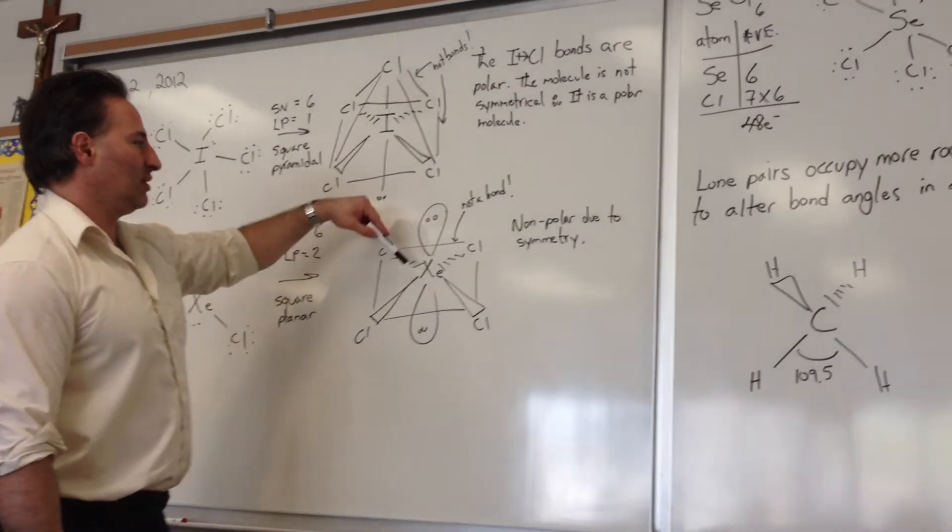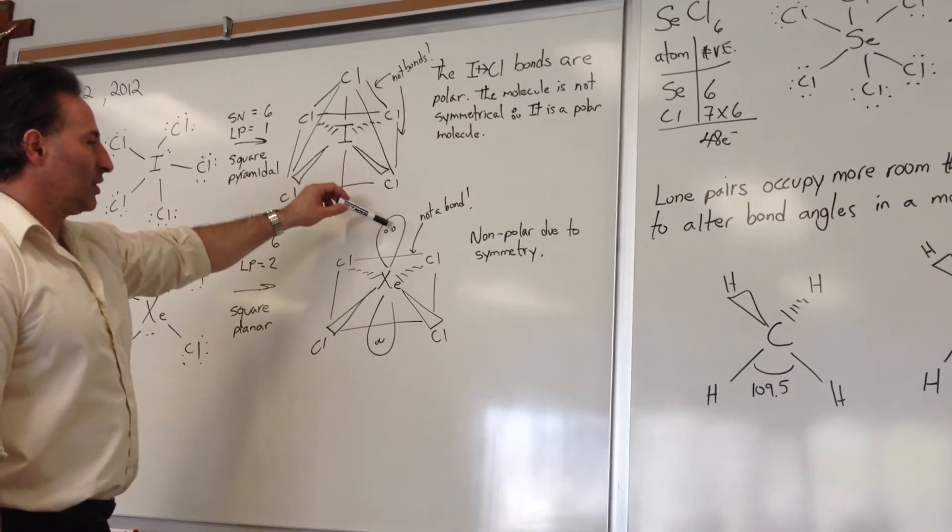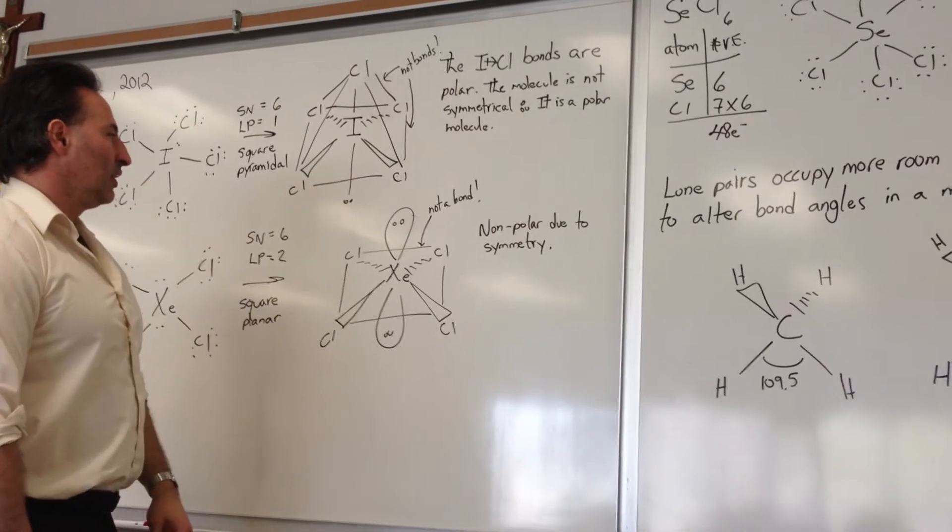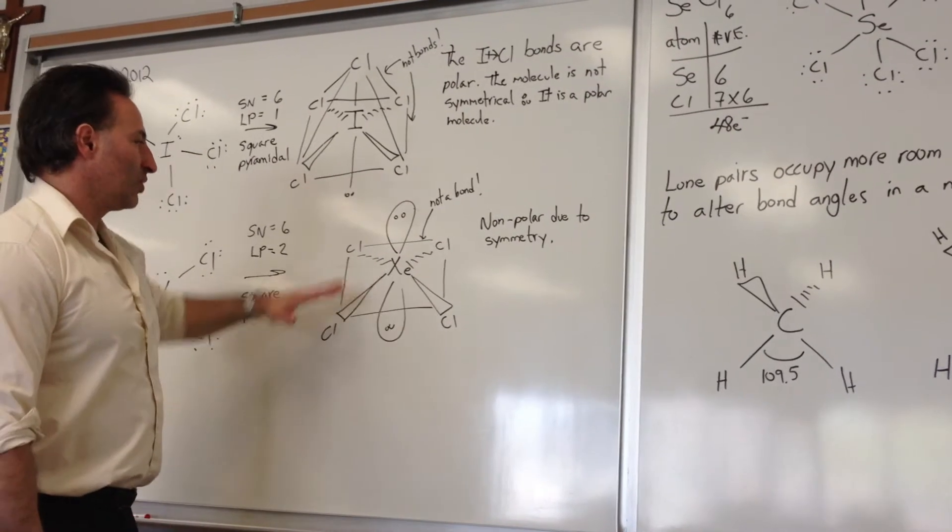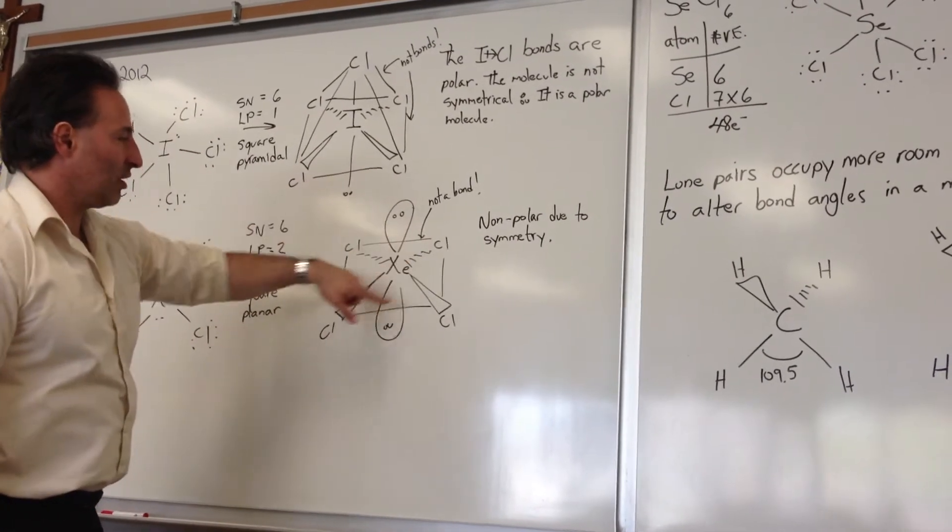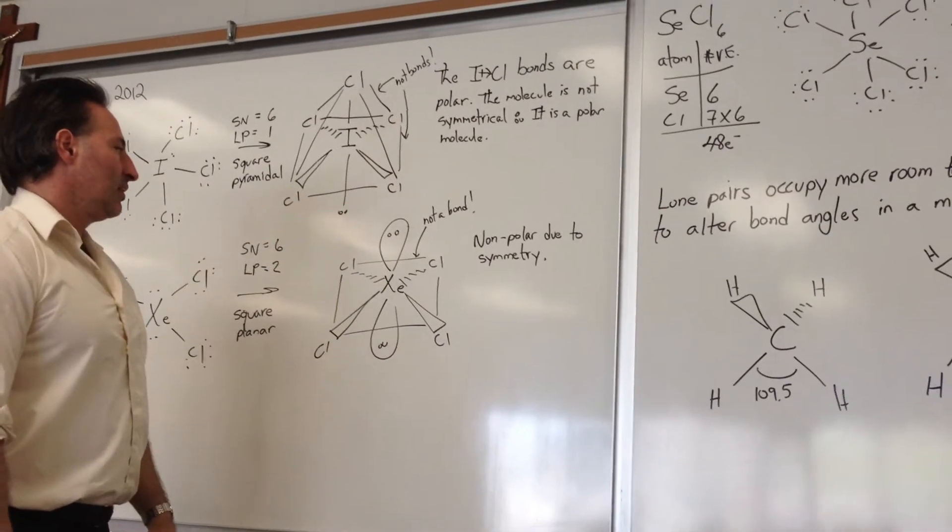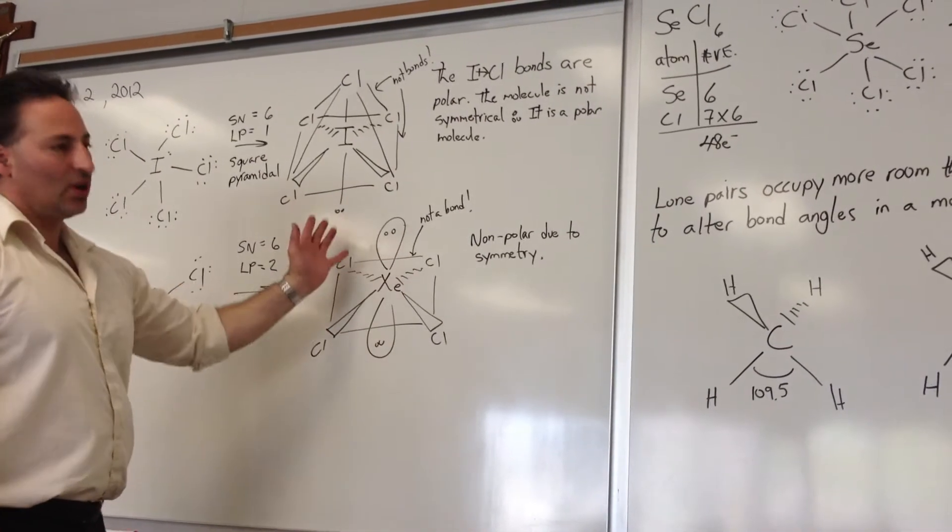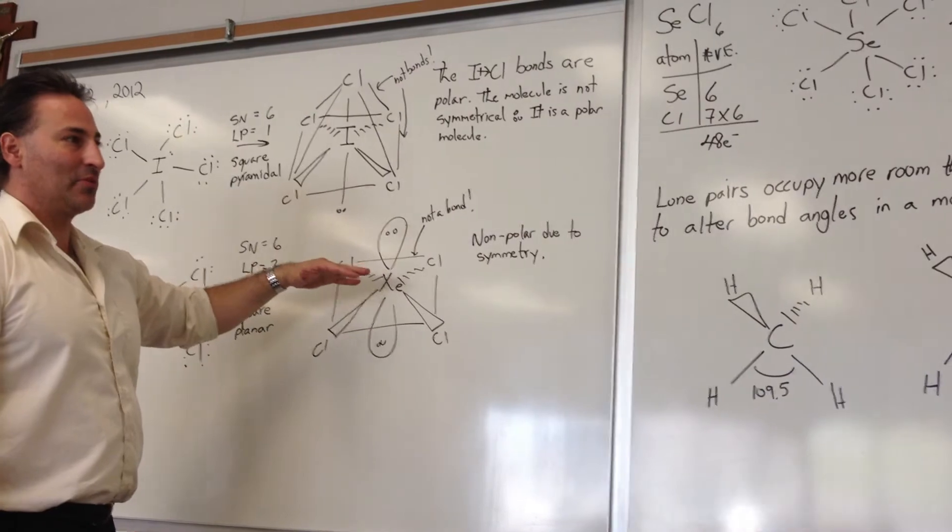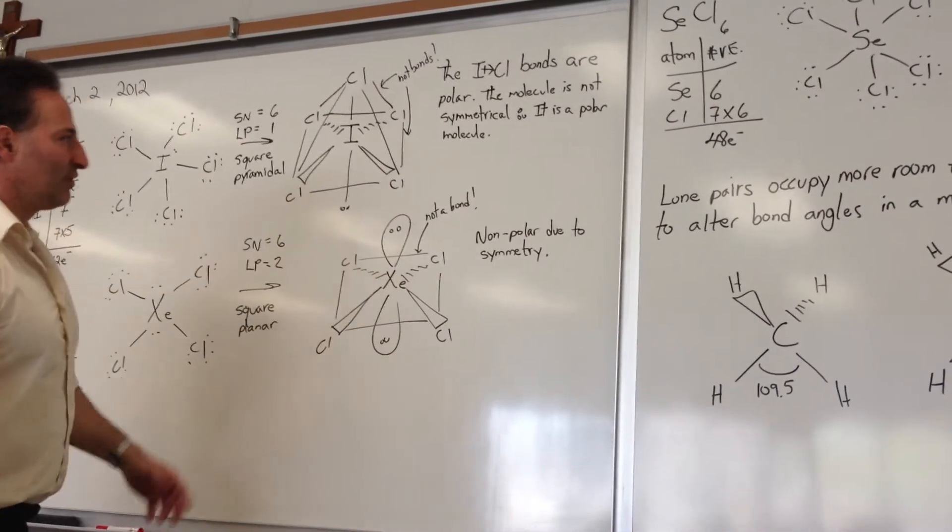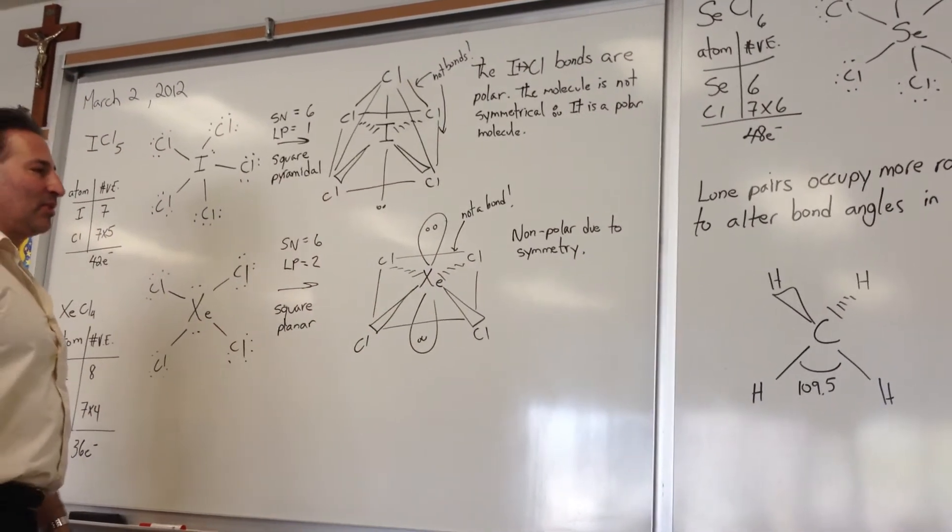So I've drawn it with the lone pairs pointing up and down, and you show that the chlorine atoms are in a plane. Now remember, depending on how you draw the molecule, you'll have a square planar geometry, although it might not look, at first glance, as a square planar molecule.